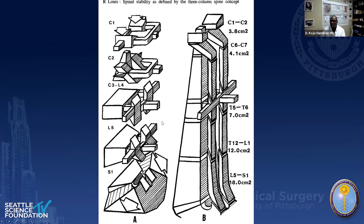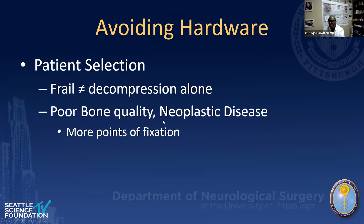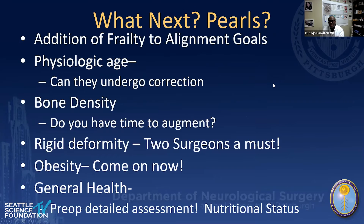Returning to the two-column theory: a frail patient is not a candidate for decompression alone — you have to be able to expeditiously place instrumentation. Patients with poor bone quality and neoplastic disease are the worst candidates for short constructs because you need more points of fixation to anchor their alignment. When doing surgery involving rigid deformity, two surgeons in this day and age is a must, as certain things need to be achieved rapidly during the procedure.